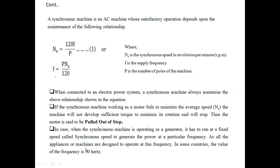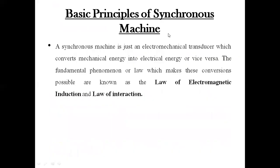All machines and appliances are designed to operate at the standard frequency. In India, the standard frequency is 50 Hz, so all generators connected to the national grid generate the same standard frequency of 50 Hz. This frequency is delivered to all types of loads — household, industries, and agriculture — and all machines are designed to work at 50 Hz.